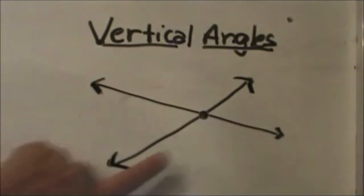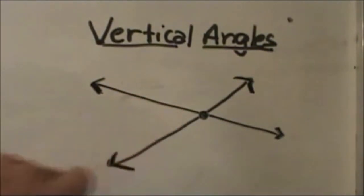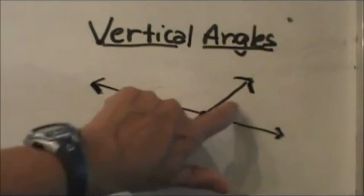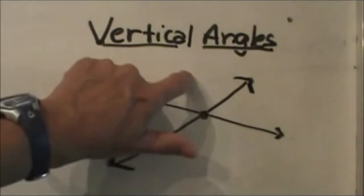Notice I have a line here and I have a line here and I have one, two, three, four angles. These are the four angles I'm looking at and my across the street neighbors are these two and these two.